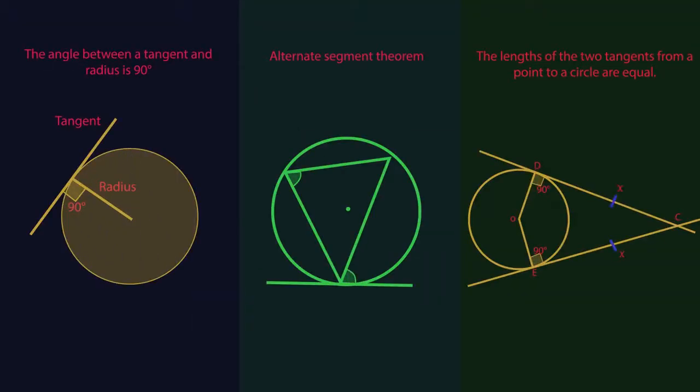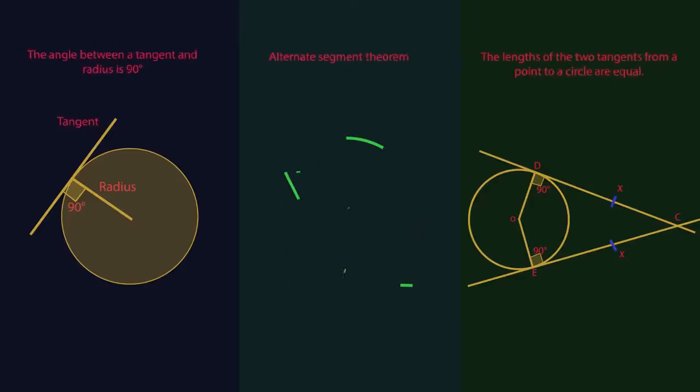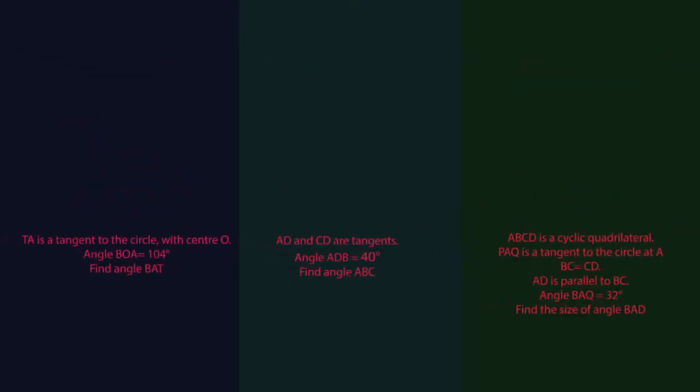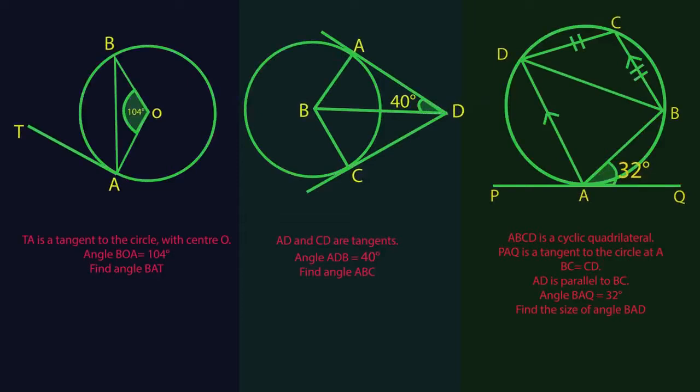How did you get on? So here are three questions for you to do. Question three requires you to use your knowledge of parallel line angles and isosceles triangles. Pause the video, find the missing angles, and click play when you're ready to check.